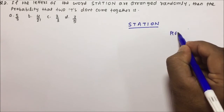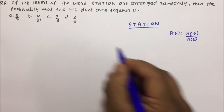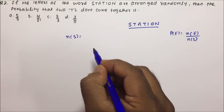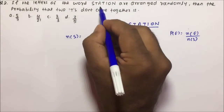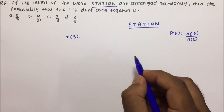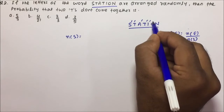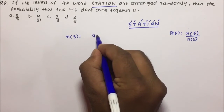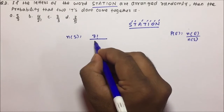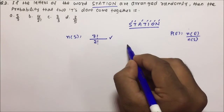Probability will again be equal to NE by NS. If we talk about NS, which is the total outcomes — arranging the letters of the word STATION — there are 7 letters total: 1, 2, 3, 4, 5, 6, 7. So it will be 7 factorial, and since T is repeated, we divide by 2 factorial. So NS = 7! / 2!.